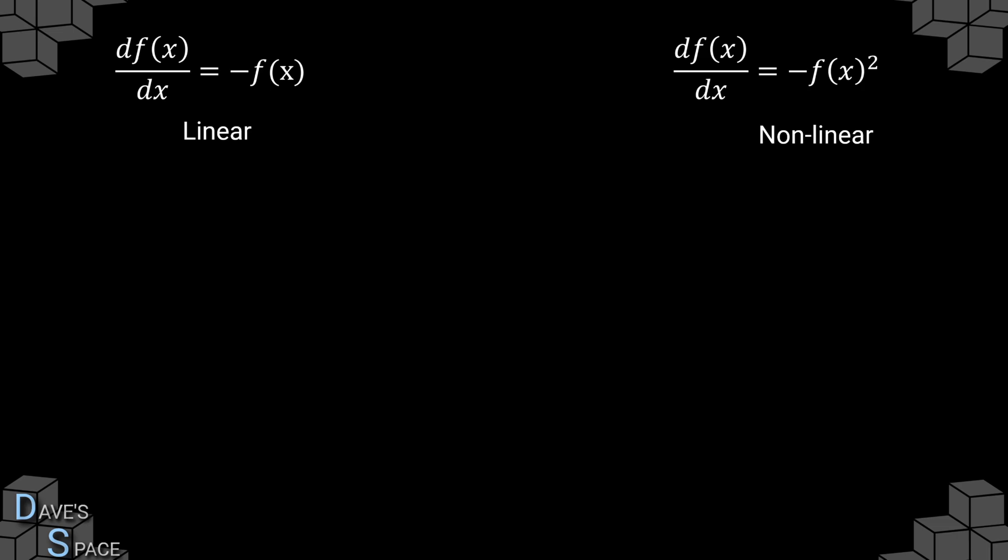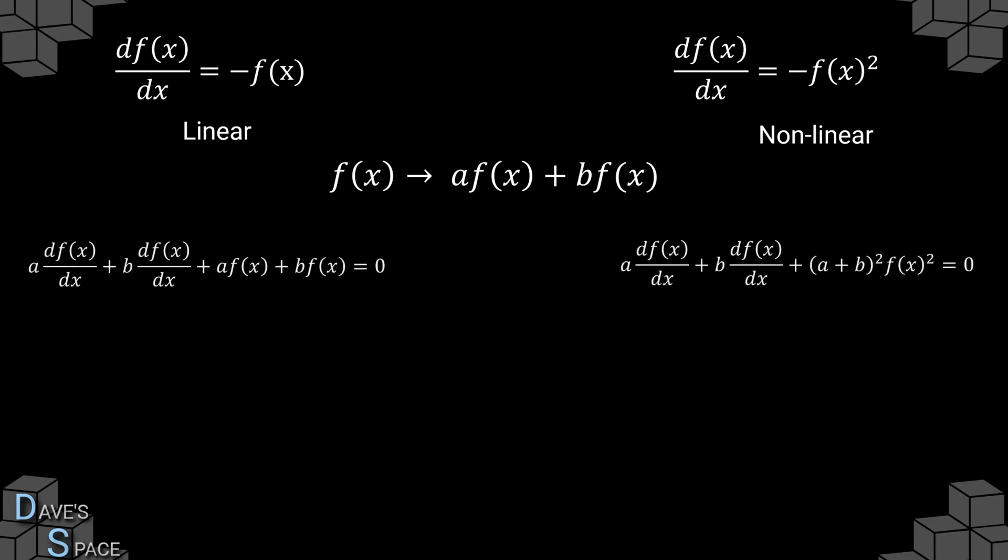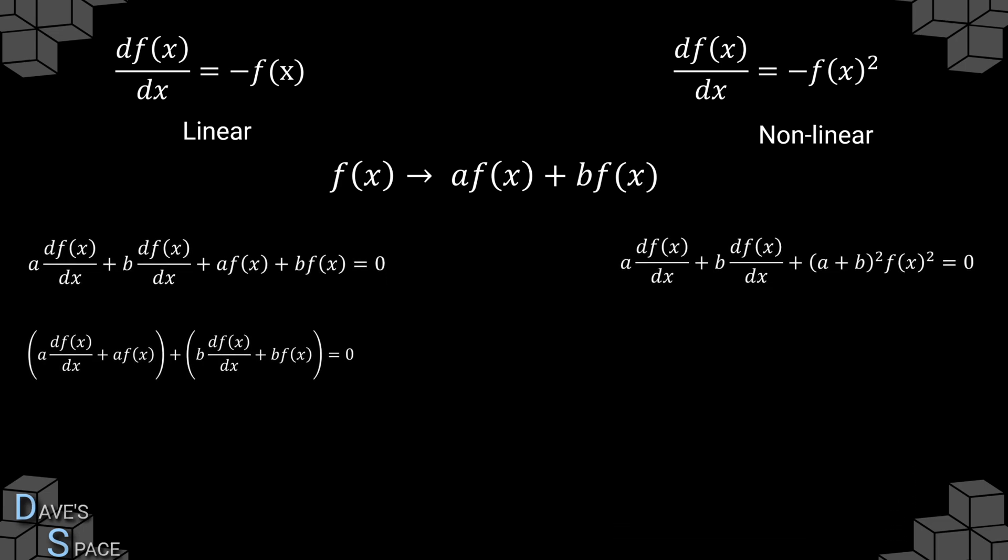So let's look a bit deeper at what the non-linear part means. So consider the two equations above. The left one is linear. The right one is non-linear. If we apply a linear combination of inputs, we get the following equations. In the linear case, we can see that the equation is the same as simply adding the equation with the input a times f(x) with the equation with the input b times f(x). For the non-linear case, we see that the equation is not the same as simply just adding the two equations with input a times f(x) with b times f(x). There is a difference. So this equation is non-linear. Any linear combination of inputs does not return the sum of the outputs for each individual input.